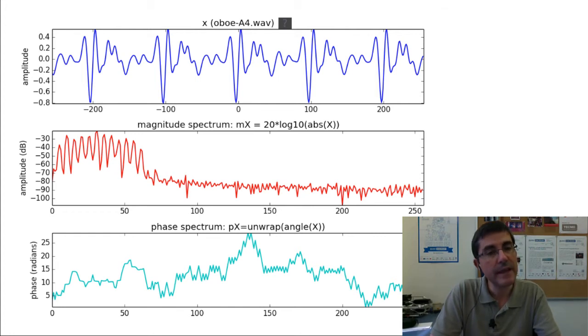And in the phase spectrum, we can see, basically, the phase, how these sinusoids are placed within the, sort of, the cycle length, and with respect to, in radians, with respect to the duration of this series of samples.